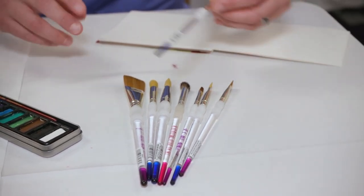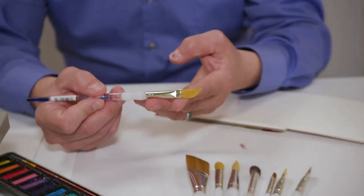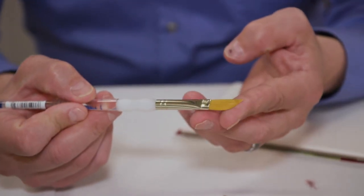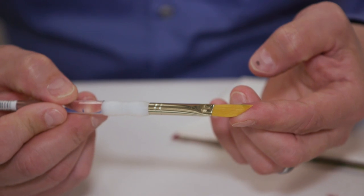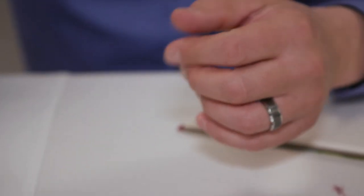Some of the unique brushes we have in this line include our dagger brush, and a lot of people will confuse this with an angular, but a dagger is actually longer bristles and comes to more of a point. So when I use this brush, I can load it with color.